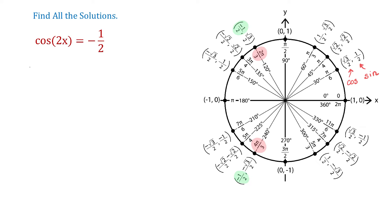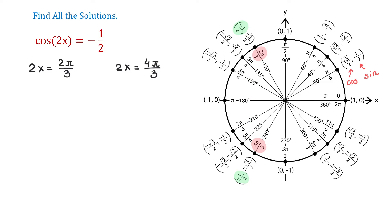So now we can write that 2x equals 2π over 3 and 2x equals 4π over 3. If we have the angle of 2π over 3 and add 2π, which is one full rotation, we end up with the same value for cosine. Each time we add or subtract 2π as many times as we want, we end up at the same point, and at this point the value of cosine is negative 1 half.